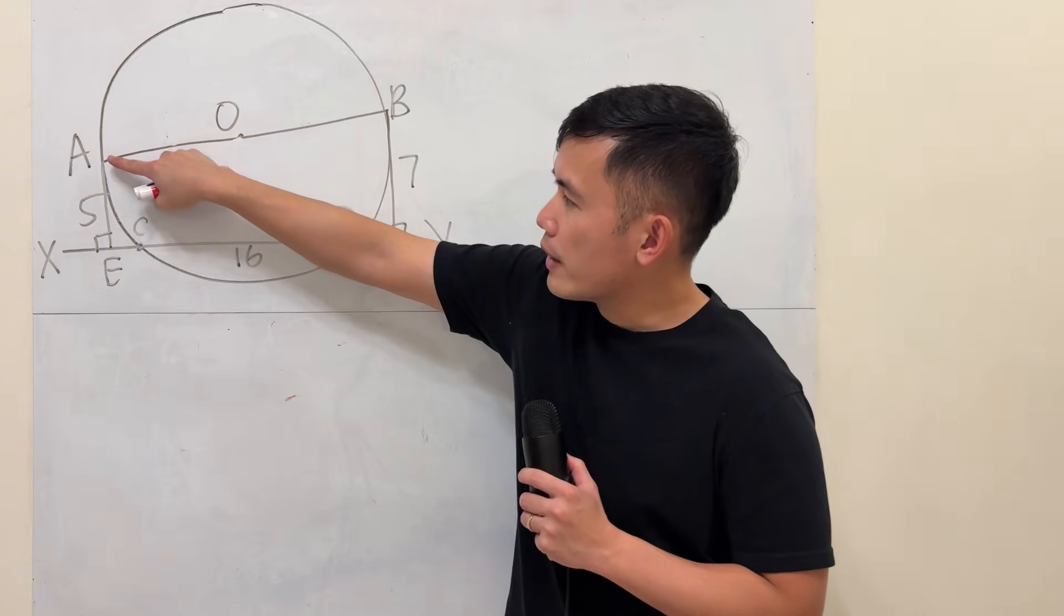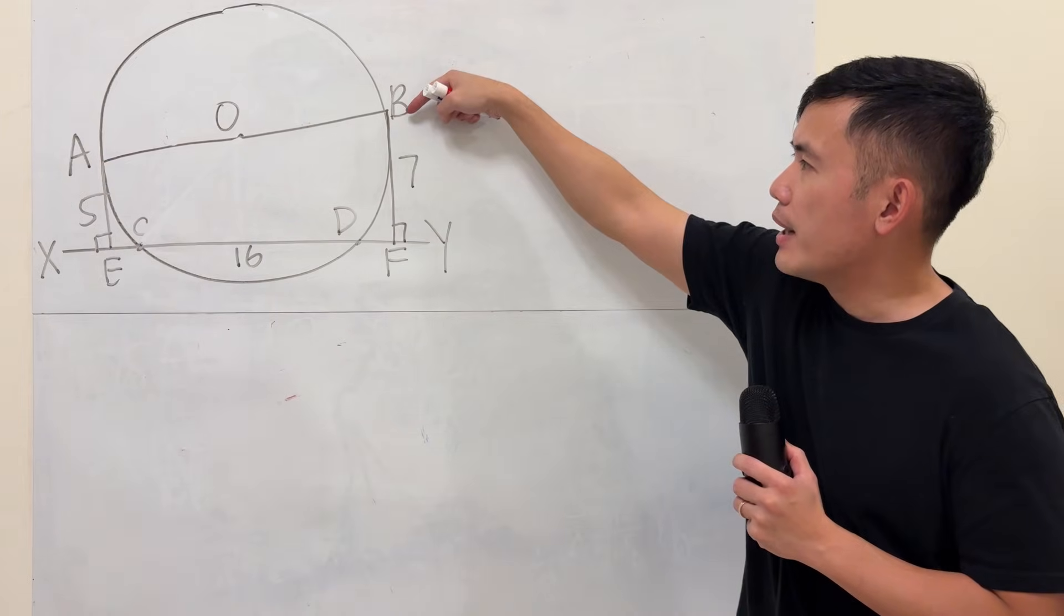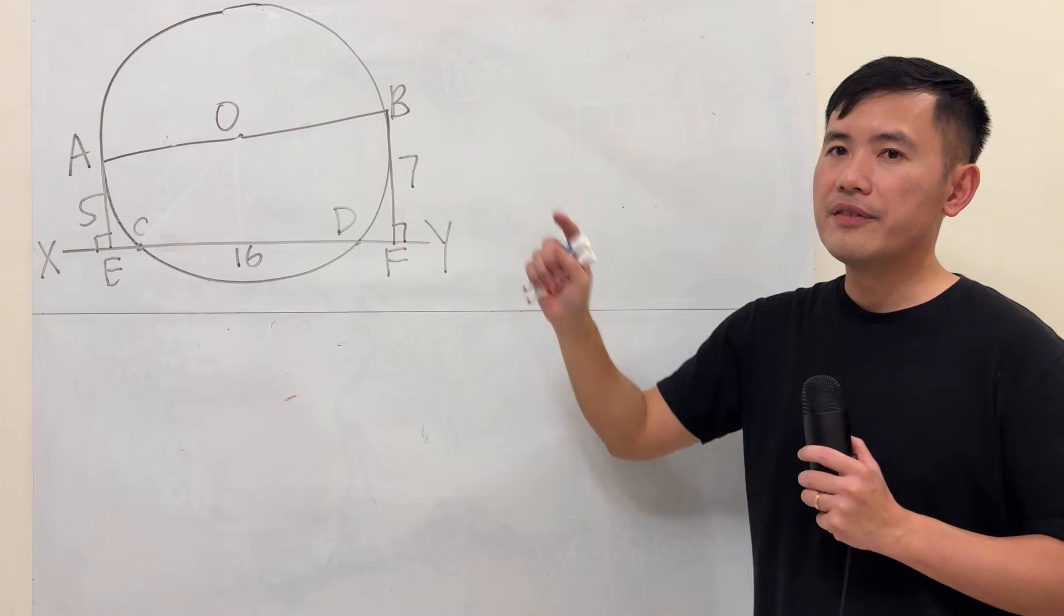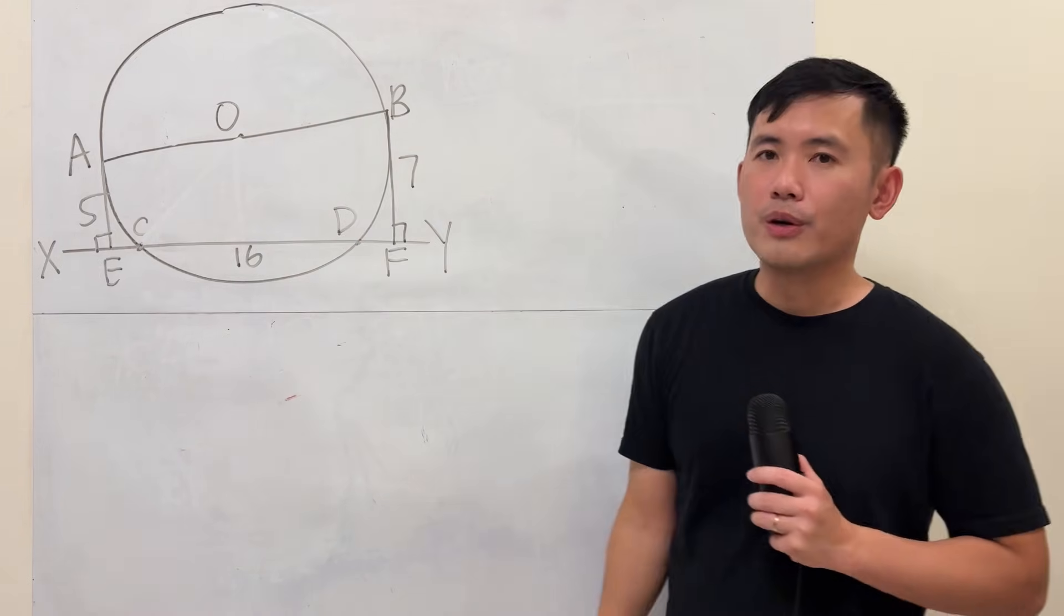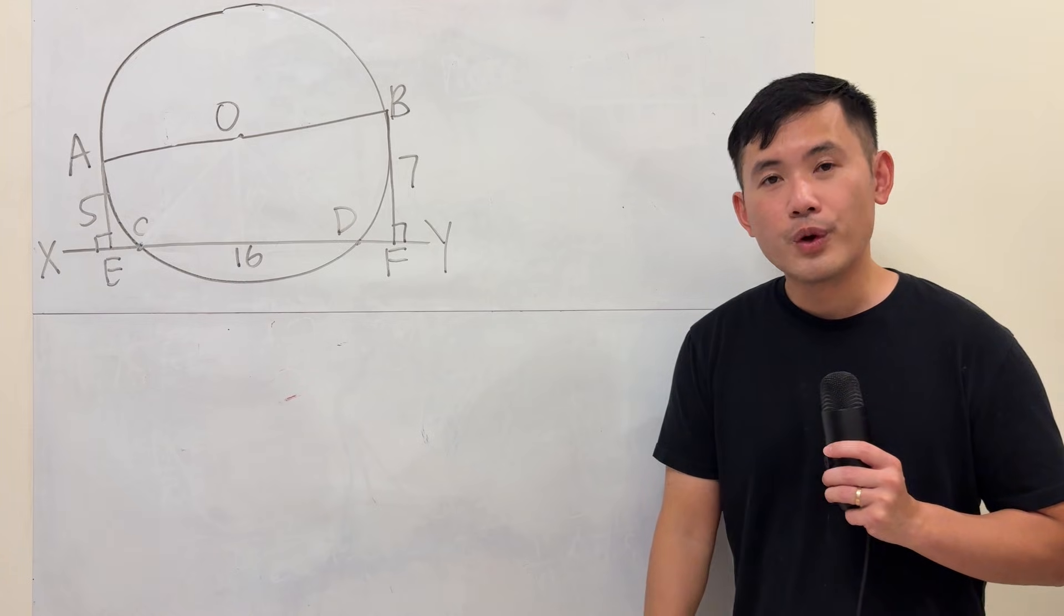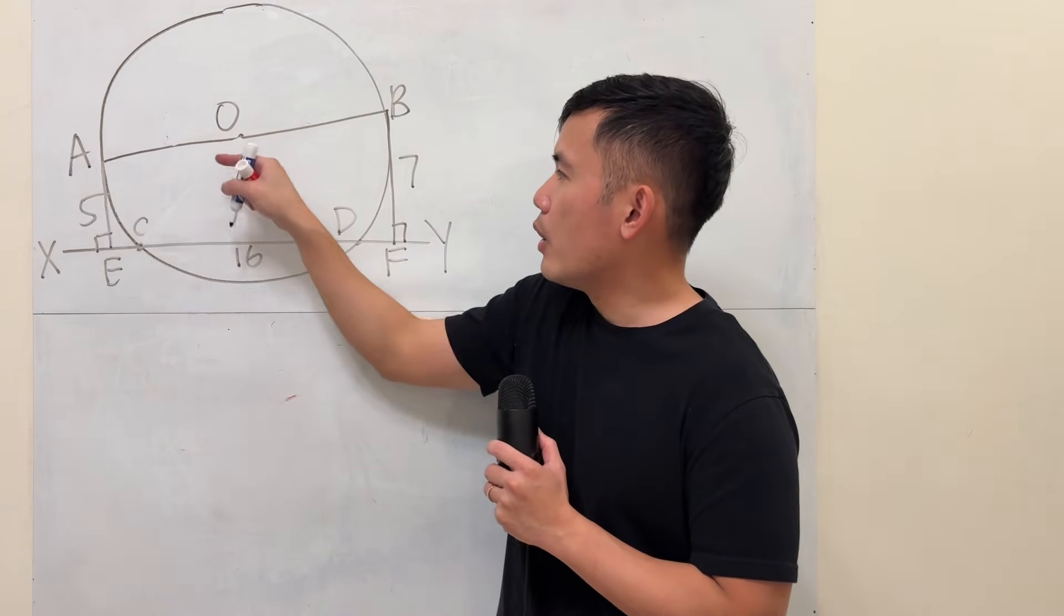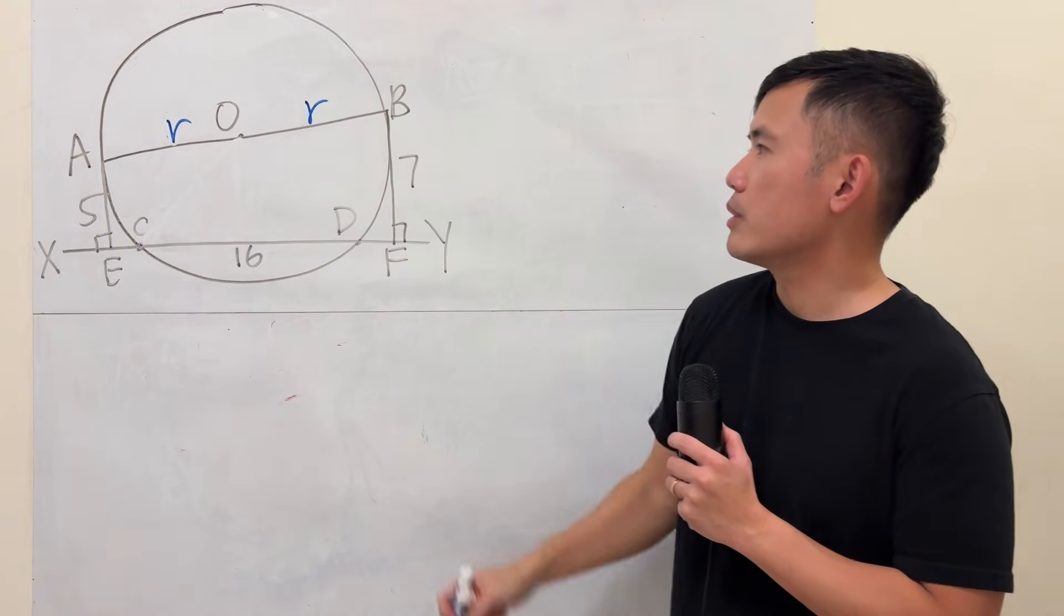If we go from A and drop down perpendicular, this distance will be 5. Likewise, if we go from B and drop down perpendicular, that distance will be 7. The question is asking us the area of the circle, so how do we do it? Well, we must have the radius, right? So right away we can see that AO is the radius, likewise OB, that's also the radius.